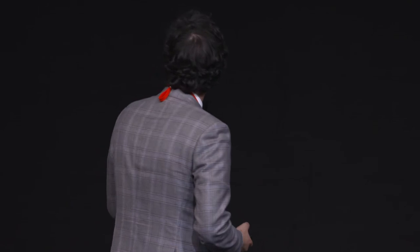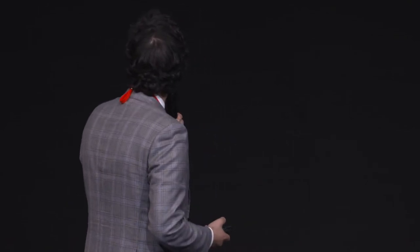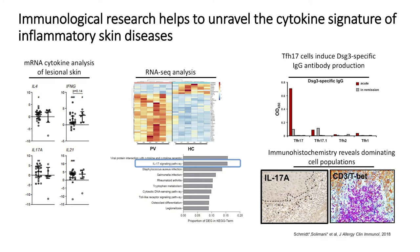We try to make an immunophenotyping in order to find new possible targets. For example, we make mRNA cytokine analysis, RNA-seq analysis, and signaling pathway analysis. We also make in Pemphigus T/B cell co-cultures in order to understand which T cell populations sustain autoantibody production.